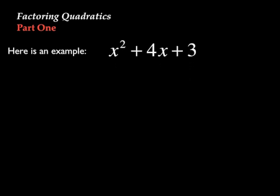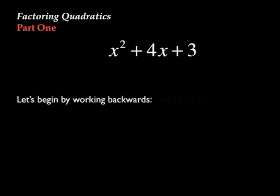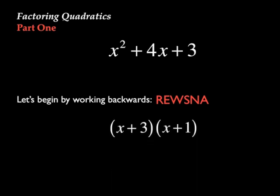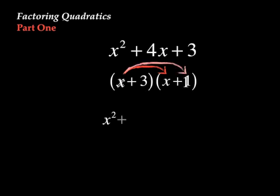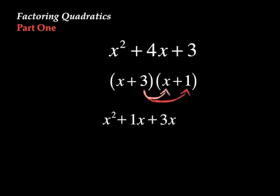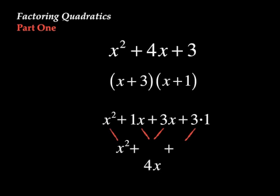Here's our first example. Let's begin by working backwards. We'll start with the answer. It's the quantity of x plus 3 times the quantity of x plus 1. So, let's multiply. Then, we'll combine the like terms. We'll see that we've gotten back to where we started from.